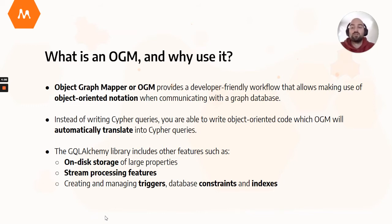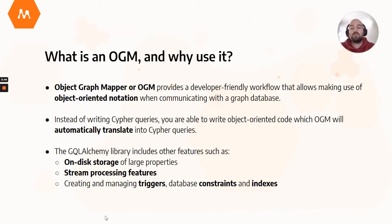Aside from OGM capabilities, it includes other features such as on-disk storage for large properties that aren't needed in the graph database. You can create and manage stream processing pipelines in Memgraph to analyze real-time data with graph algorithms. There are other features like managing database triggers, creating constraints such as uniqueness and existence constraints, as well as creating indexes for faster data retrieval.